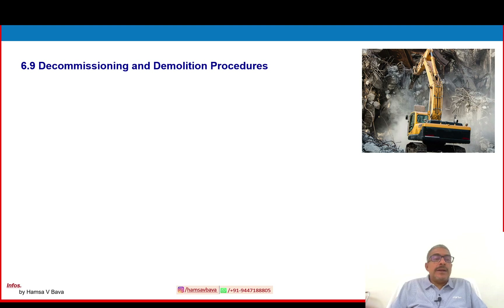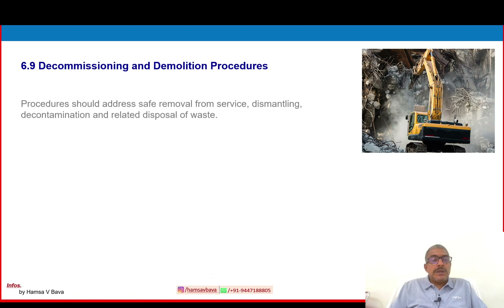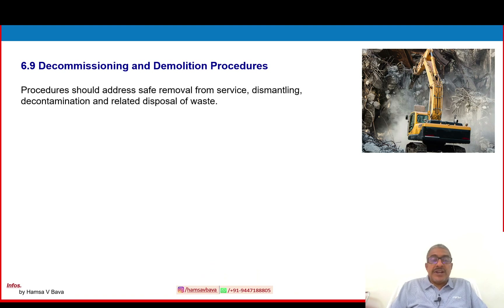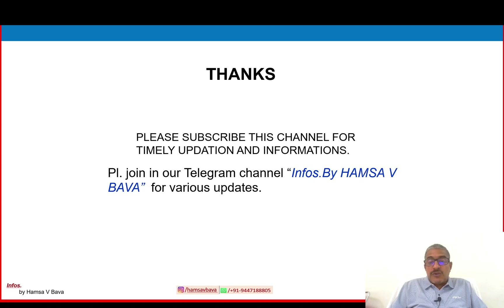6.9 — decommissioning and demolition procedures: procedures should address safe removal from service, dismantling, decontamination and related disposal of waste. Thanks for watching this video. In our next video we will discuss Parts 7 and 8 in the process safety management system.